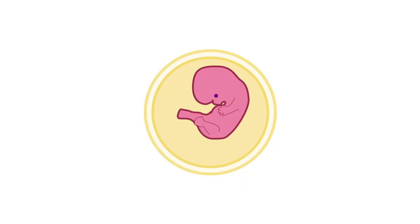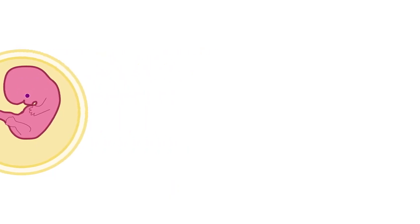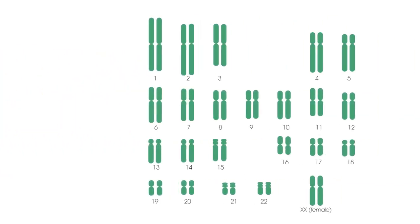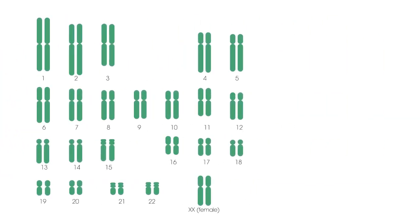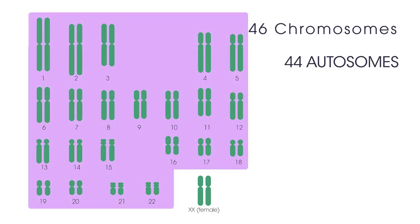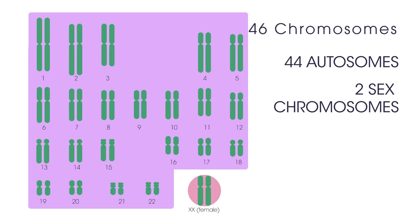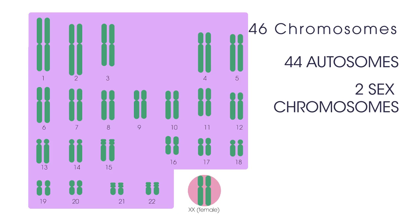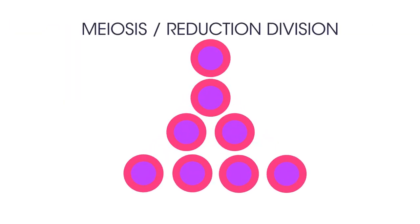This is what happens in Down's syndrome. Humans usually have 23 pairs of chromosomes — 46 in total: 44 autosomes and two sex chromosomes. Sex cells are produced in the type of cell division called meiosis, or reduction division.